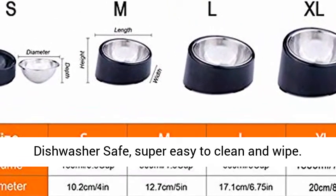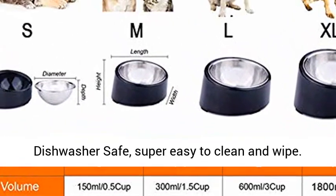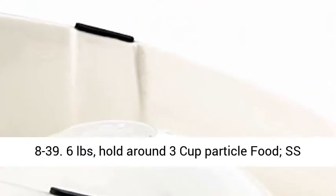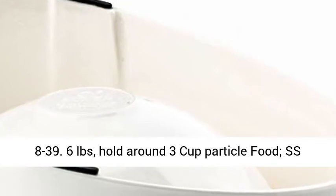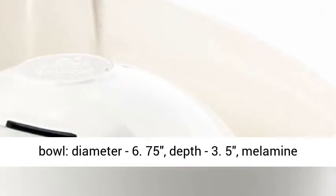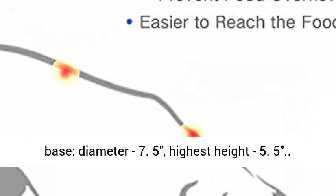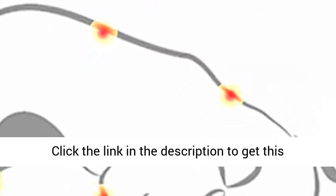Dimensions: for medium and large dogs between 19.8 to 39.6 pounds, holds around 3 cup particle food. SS bowl diameter 6.75, depth 3.5. Melamine base diameter 7.5, highest height 5.5.